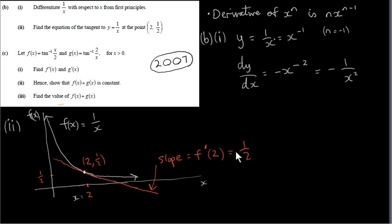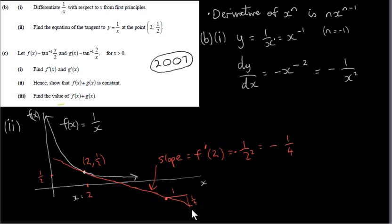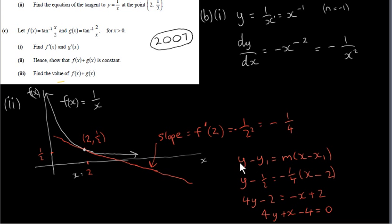The derivative is minus 1 over x squared, so it's minus 1 over 2 squared, which is minus 1 quarter. The slope of this line is minus a quarter — as you can see, it has a negative slope. Just to remind you of what slope means: if we pick any point on this line and increase x by 1, then y will decrease by a quarter. To get the equation of the line we use y minus y1 equals m times x minus x1. The point on the line is (2, 1/2) and the slope m is minus a quarter.